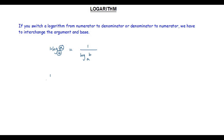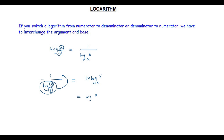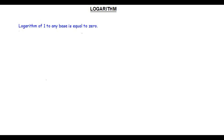Now if I switch the logarithm from denominator to numerator — like 1 divided by log X to the base Y — when it comes to the numerator it will be multiplied by 1, and I have to interchange the argument X and base Y. So I get log Y to the base X. Therefore, 1 divided by log X to the base Y is equal to log Y to the base X.